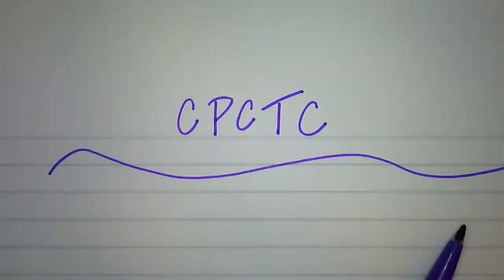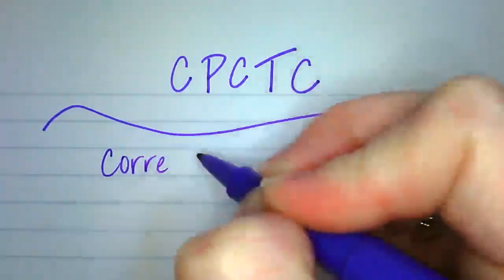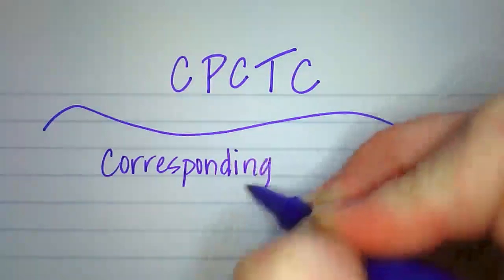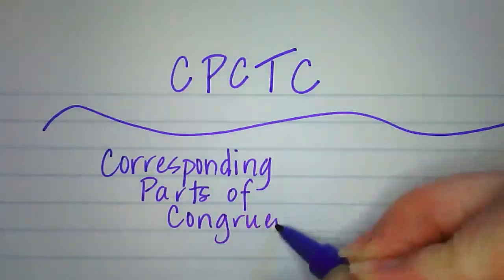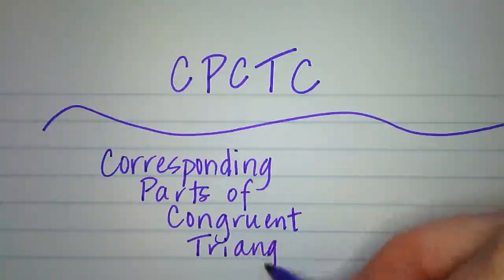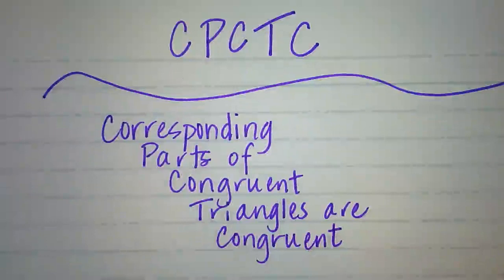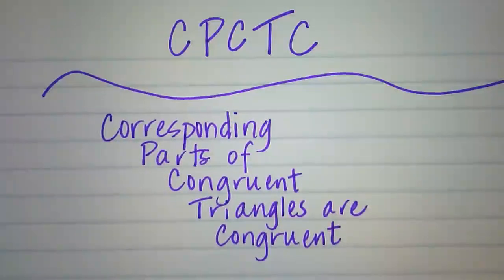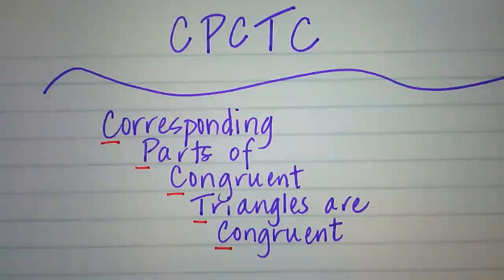This video is going to explain CPCTC — kind of a weird-sounding acronym. CPCTC stands for 'Corresponding Parts of Congruent Triangles are Congruent.' That's where we get the acronym: corresponding parts of congruent triangles are congruent.